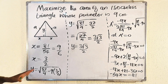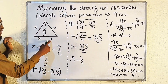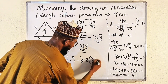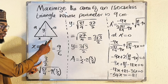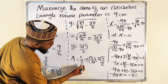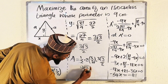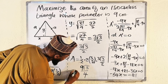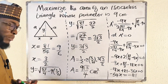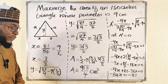Now we can plug x and y back to find the area. Area = (1/2) × base × height = (1/2) × 2x × y = (1/2) × 3 × (3√3/2). The 2's cancel: 3 × 3 = 9, so Area = 9√3 / 4 cm². This is the maximum area achievable for this triangle.